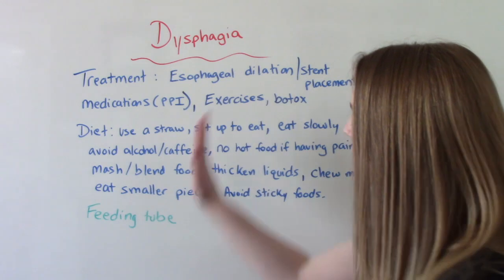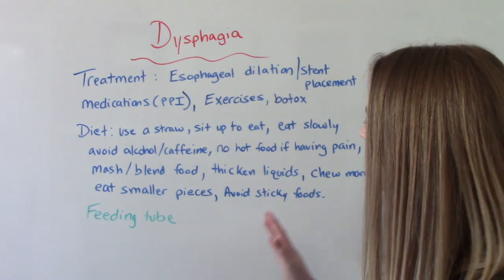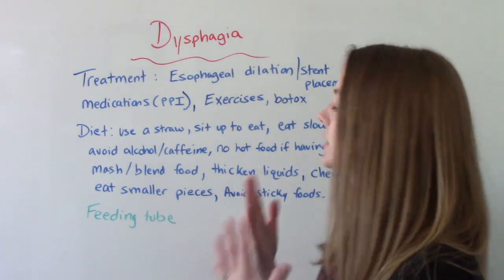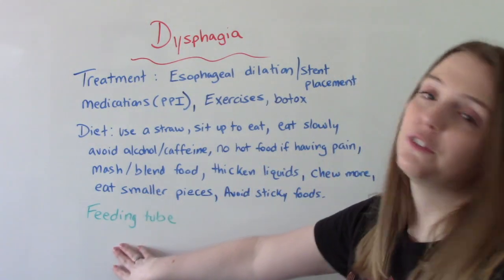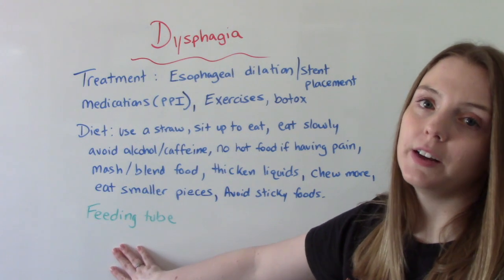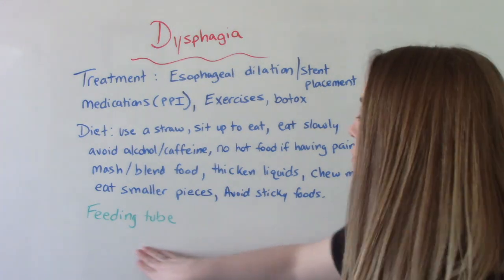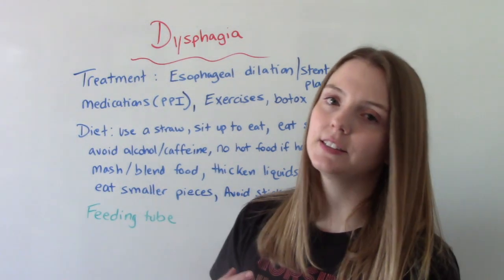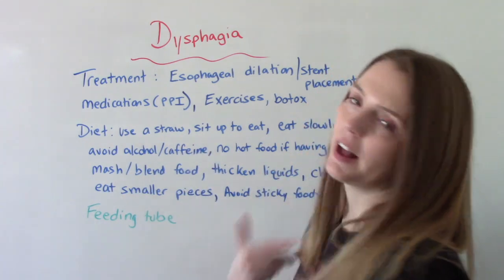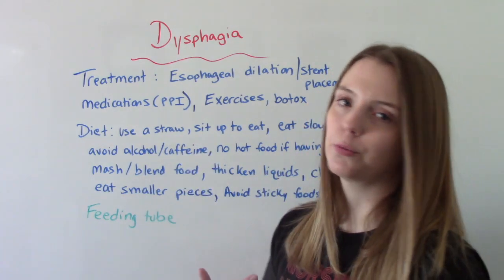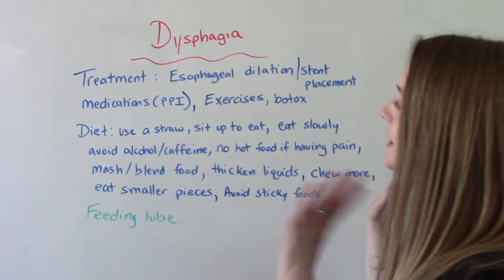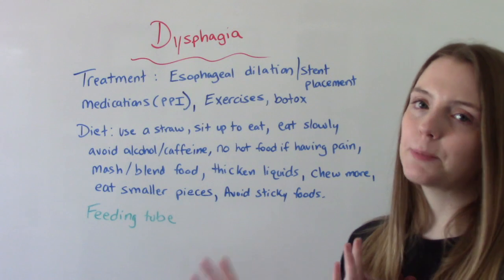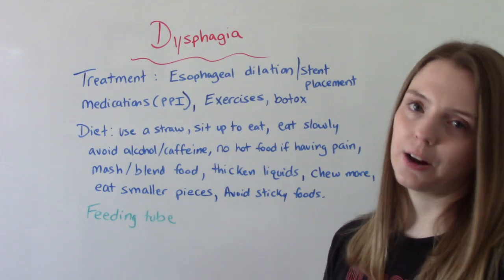And then after all of these dietary things, if this is not enough for your patient, a feeding tube would be another potential treatment. That way they can get all their nutrients and bypass their throat. So lots of different treatment options — it really depends on what's going on with them.